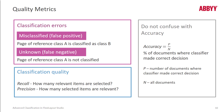Recall is the percentage of documents classified with correct classes within the whole amount of documents assigned reference classes. Precision is the percentage of documents that have been classified correctly within the whole set of documents that were classified and assigned a class.